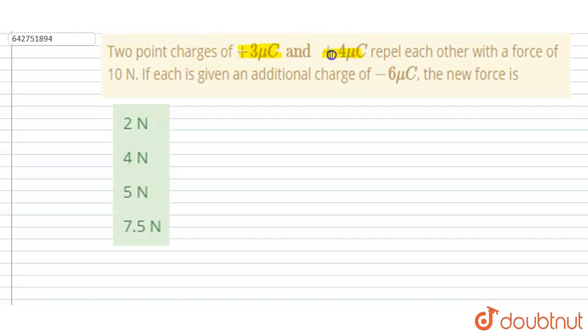Two point charges of 3 microcoulombs and 4 microcoulombs repel each other with a force of 10 newtons. If each is given an additional charge of -6 microcoulombs, then you have to find out the new force. So initially the two charges were at some distance r.